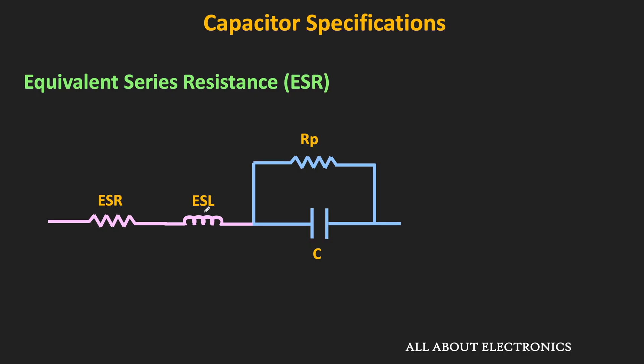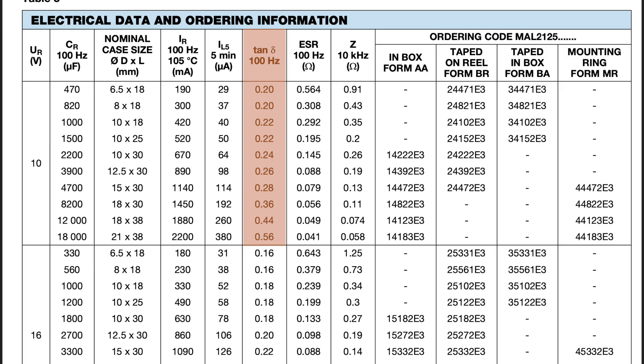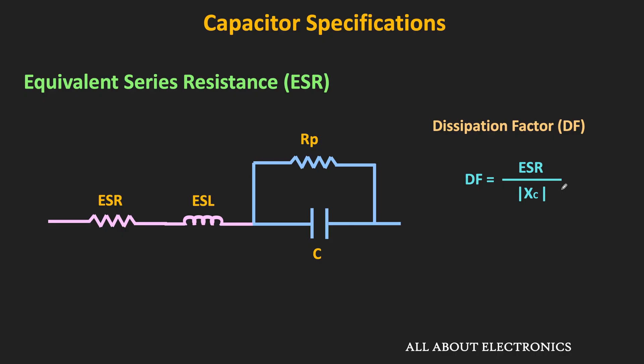Sometimes the manufacturer mentions the dissipation factor instead of the ESR. The dissipation factor is the ratio of ESR to the reactance of the capacitor at the test frequency. The test condition is also usually mentioned in the datasheet. To minimize power dissipation, this dissipation factor should be as low as possible.